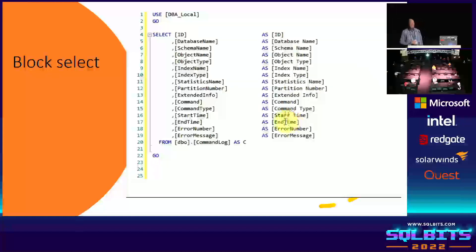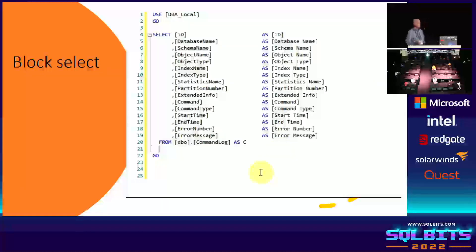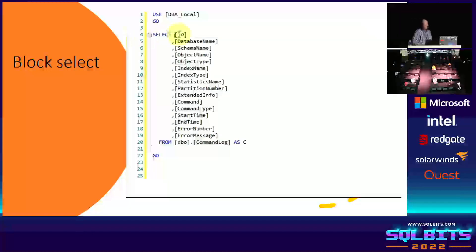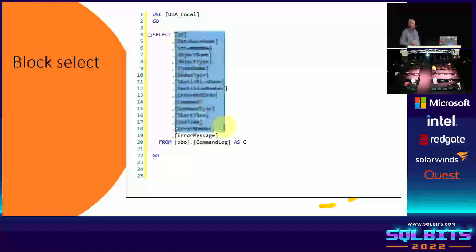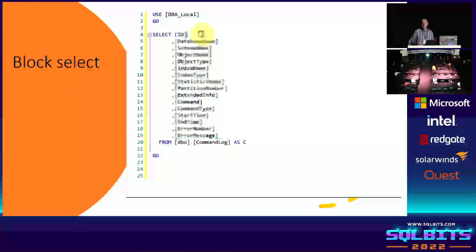A quick and dirty use case: to truncate all the tables in your database, do a select name from sys.tables, drag and collect the results, drop them onto your command window, and type 'truncate table' on the beginning of every line in one quick go. Hit the button — quick and dirty, but it does the job.